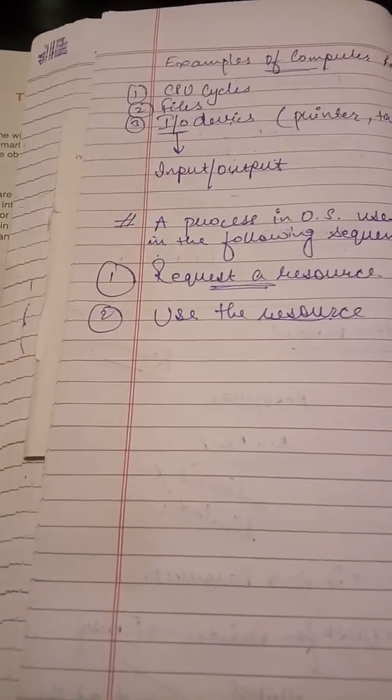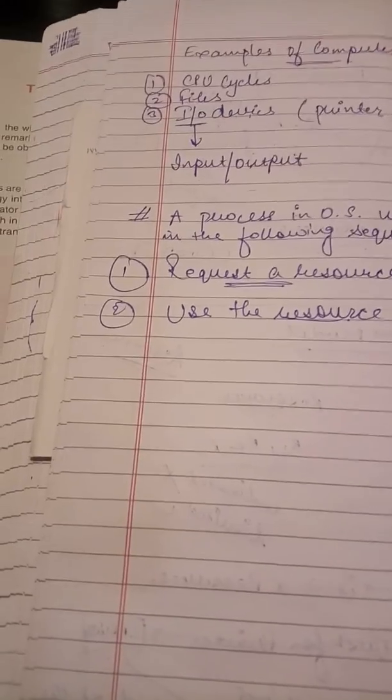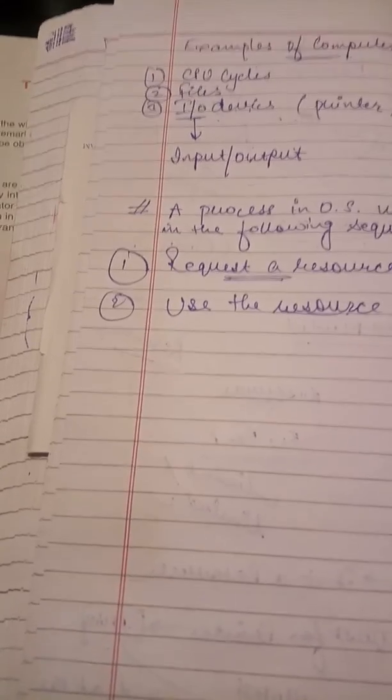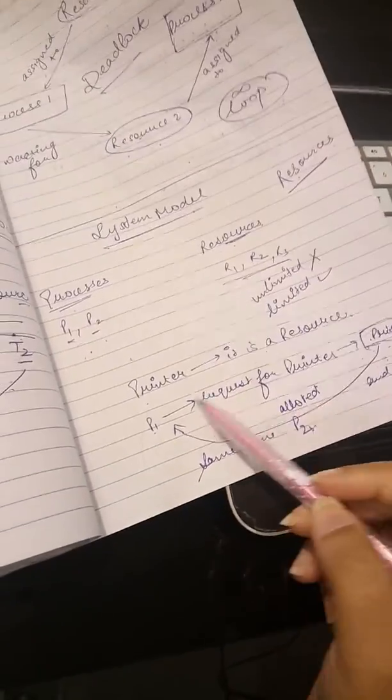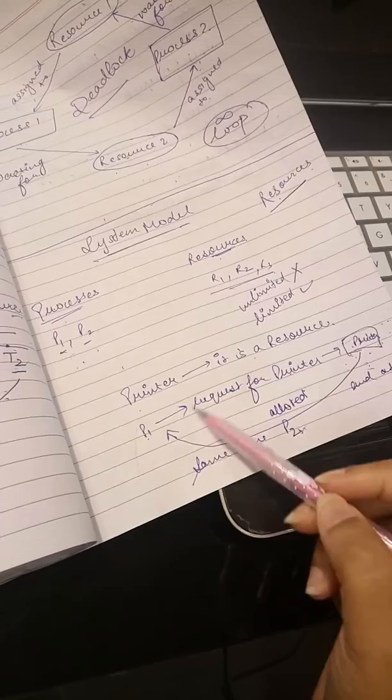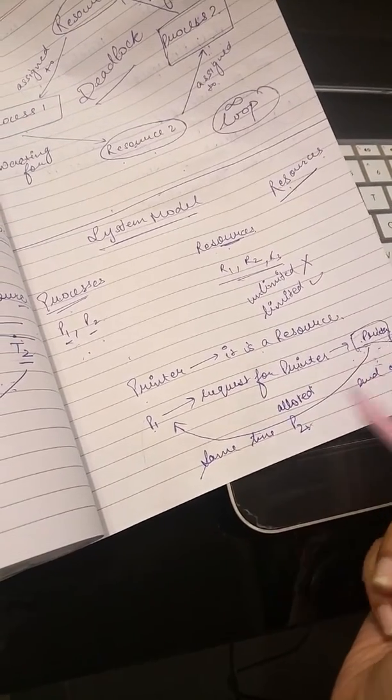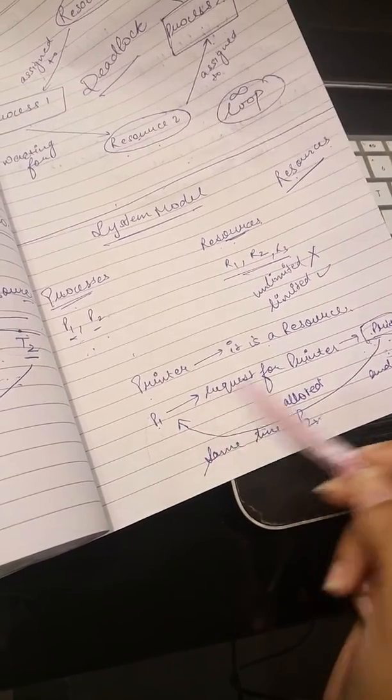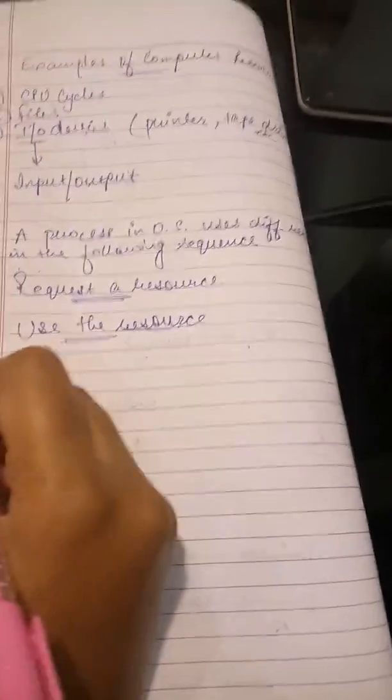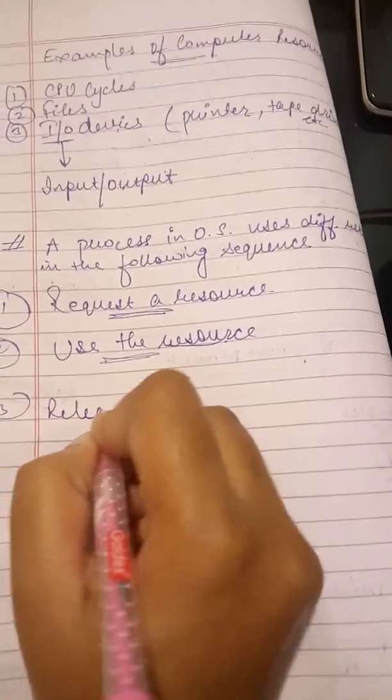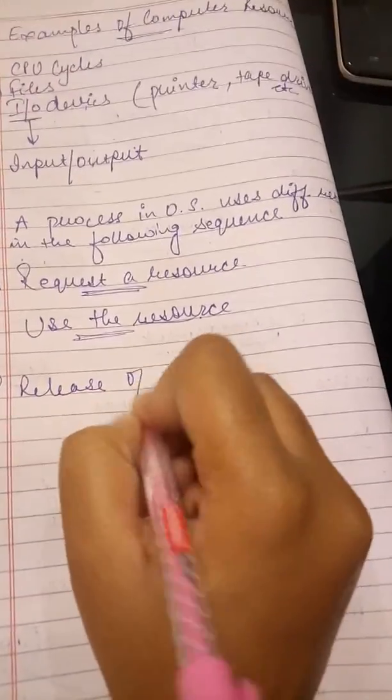So next point that comes is use the resource. The process can operate on resource. For example if resource is printer, process can print on it. Like in previous example the process P1 which was already allotted the printer, now P1 has requested which was a first point and the second point when it got allotted it has to use it. In the use the resource, our P1 process is using the printer.